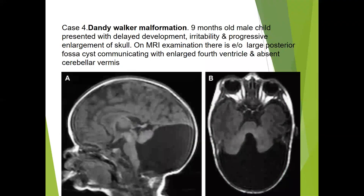The fourth case was of Dandy-Walker malformation. A nine-month-old male child presented with delayed development, irritability, and progressive enlargement of the skull. On MR examination, there is evidence of a large posterior fossa cyst communicating with an enlarged fourth ventricle and absent cerebellar vermis.